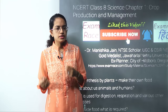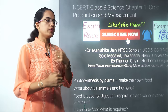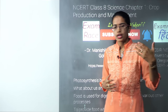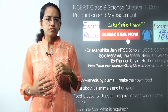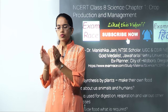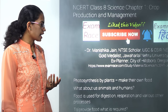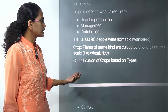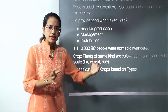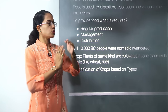In Class 7 topics we talked about nutrition in plants and animals, and this nutrition is derived from food. Now, where does this food come from? There needs to be a sequence through which we ultimately get the processed food consumed by us. First there is production, then management and storage, and finally it is distributed to the people.